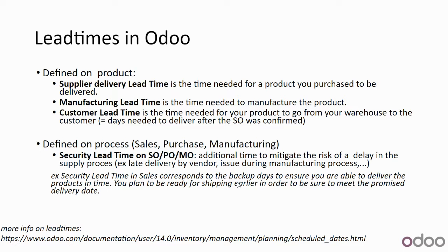We have two kinds of lead times. The first are lead times defined on a product, specifically for that product. For example, the supplier delivery lead time is the time between confirmation of the purchase order and receipt of goods. The manufacturing lead time is the time needed to manufacture the product. The customer lead time is the time between confirmation of the sales order and delivery of the goods.